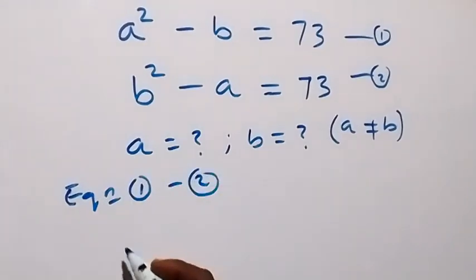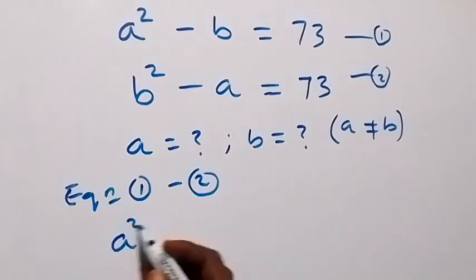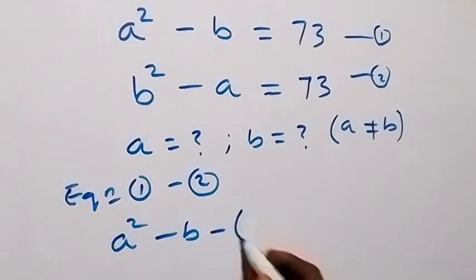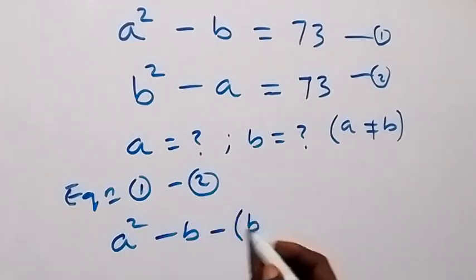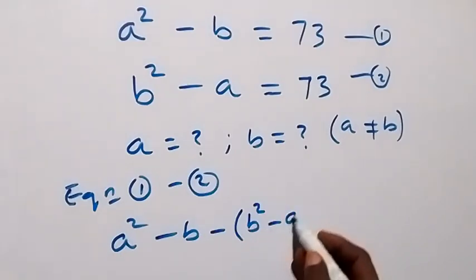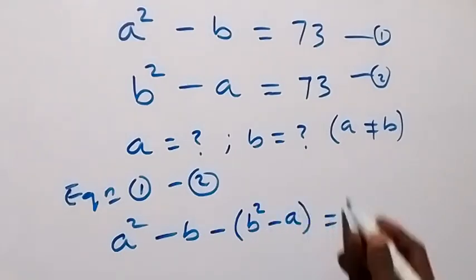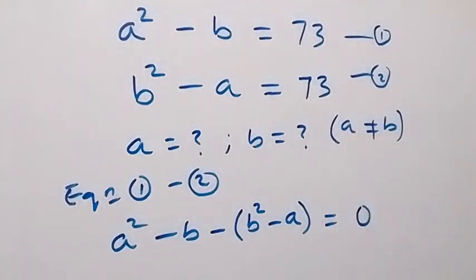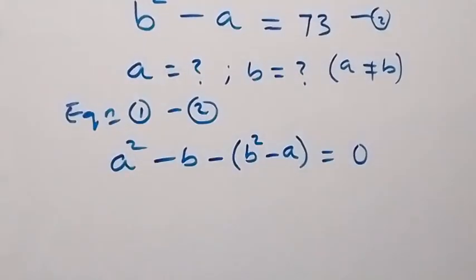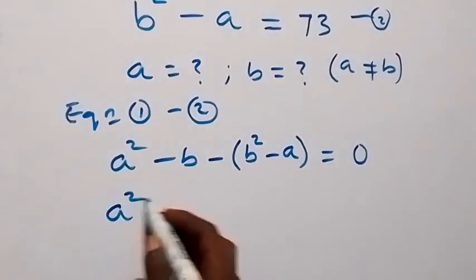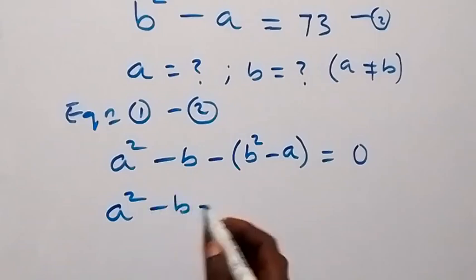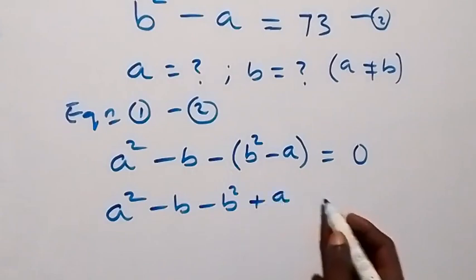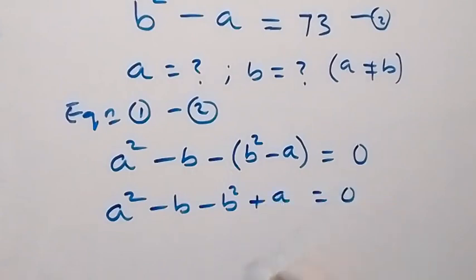From equation 1 we have a squared minus b. Then we have minus equation 2, which is in bracket b squared minus a. On the right hand side, 3 minus 3 equals 0. When we open this bracket, this becomes a squared minus b, then minus b squared. Then minus of negative a becomes plus a, equals 0.